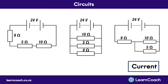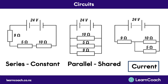Now we'll look at current in a series, parallel, and mixed circuit. In the series circuit, the current is constant; in parallel, it's shared. The red arrows show how the current is constant throughout the entire series diagram, whereas with the parallel diagram, the orange arrows show the different amounts of current going through each branch. The mixed circuit diagram is just a mixture of both — it's got the constant part as well as the shared part.